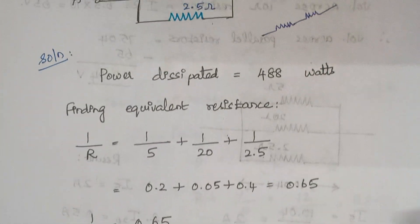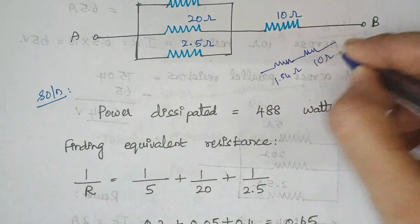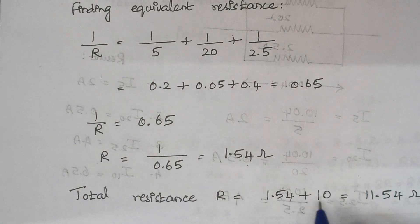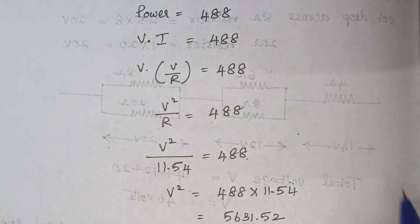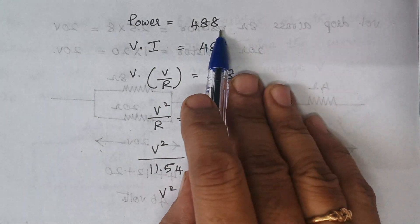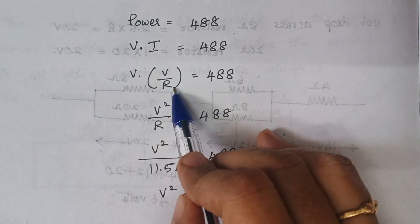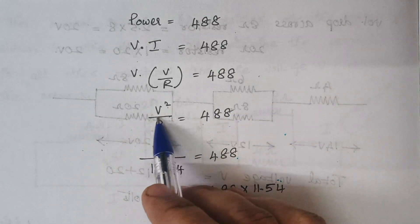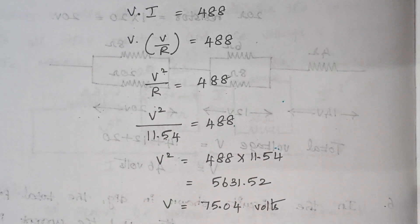When you solve and calculate the value of R, it is 1.54 ohms. Here it is 1.54 ohms and this 10 ohm remains as such. Now the total resistance is just 1.54 plus 10, which gives you 11.54 ohms. So the value of power is given as 488 watts. The formula for power is V into I, and here I is written as V by R. Therefore, V squared by R is equal to 488.